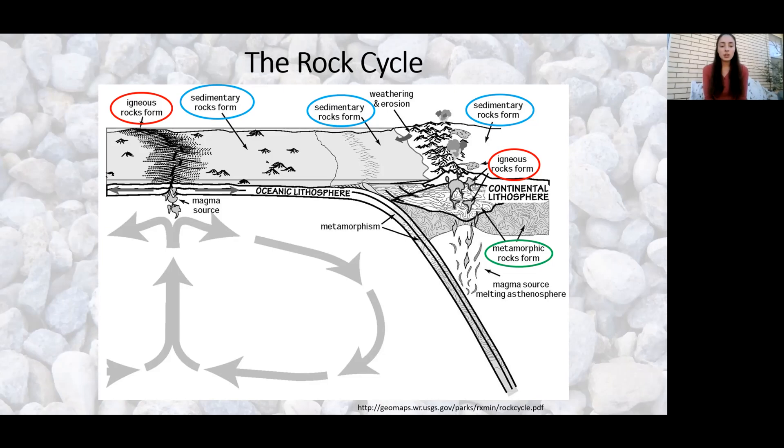You can see here you've got a subducting oceanic plate and a continental plate that it is subducting under. You also have on the far left a mid-ocean ridge, which we'll get to in other episodes. Basically it's just where new crust is forming because oceanic plate is spreading apart and magma is coming up there forming new crust.